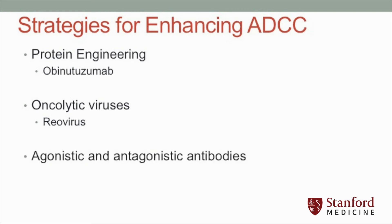Finally, agonistic and antagonistic antibodies that target natural killer cell activation pathways provide a promising strategy for enhancing ADCC. One molecule that has demonstrated strong preclinical success in this approach is CD137, a member of the tumor necrosis factor superfamily that upon ligation increases natural killer cell proliferation, degranulation, and interferon gamma secretion, resulting in greater cytotoxicity.